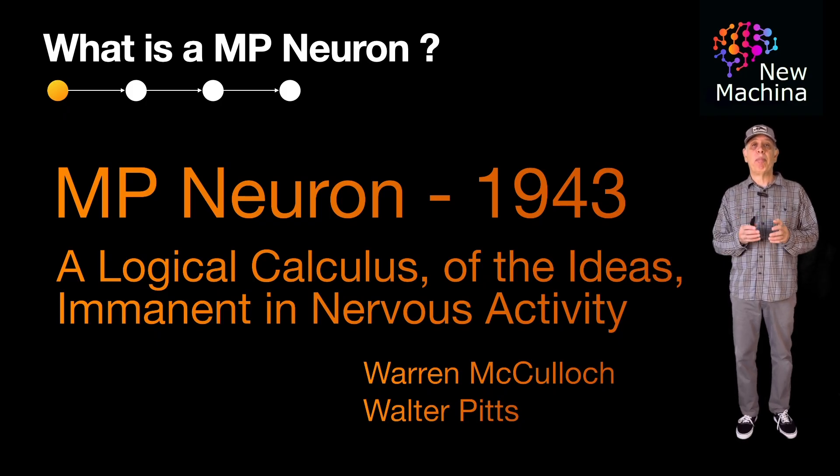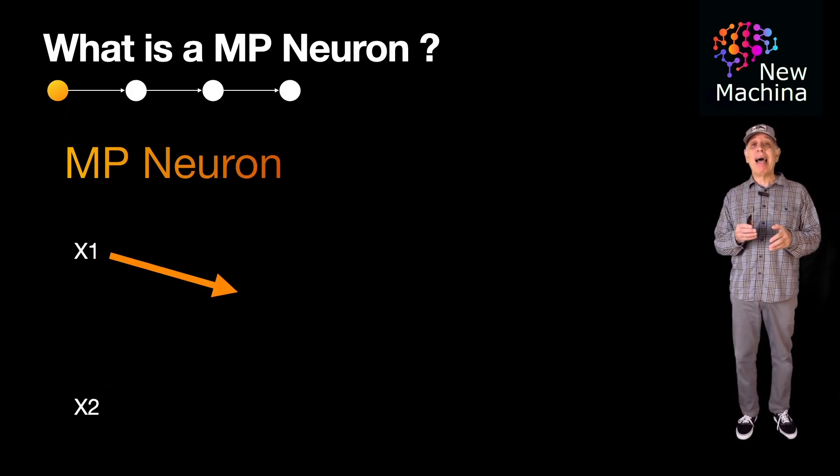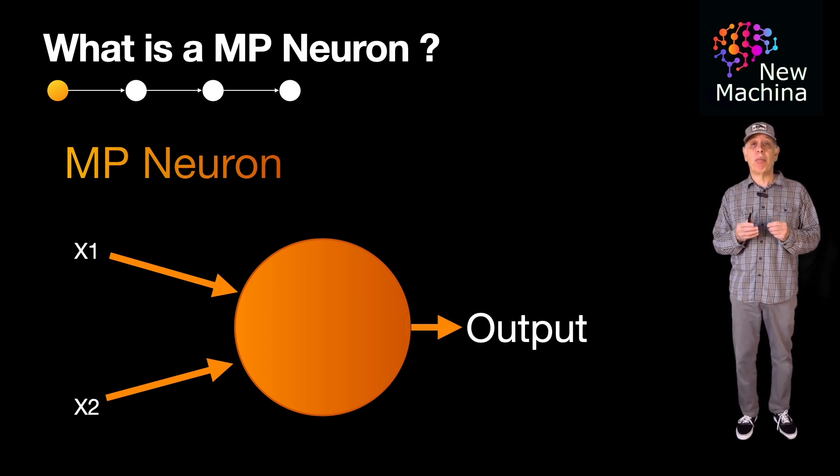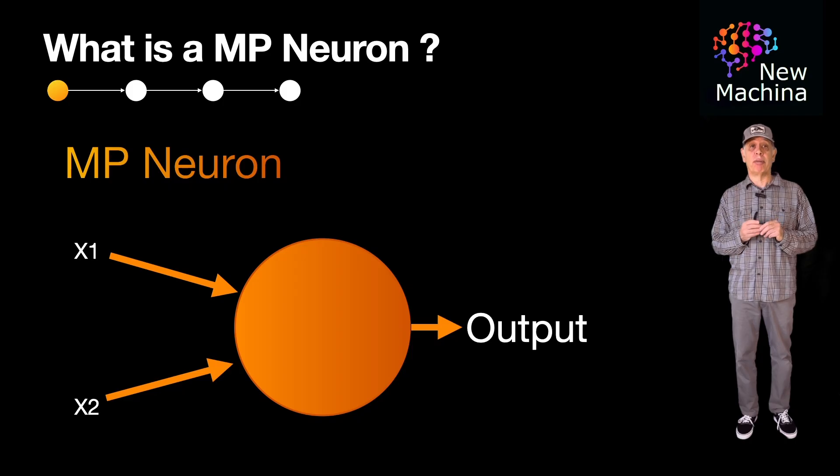The MP Neuron is a simple mathematical model of a biological neuron. It represents a basic model of how neurons in the brain might process information. Despite its simplicity, it laid the foundation for the development of modern artificial neural networks.